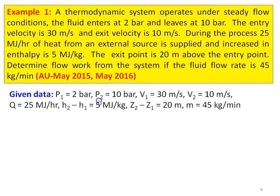Reading the problem carefully and writing down the given data: P₁ = 2 bar, P₂ = 10 bar, V₁ = 30 m/s, V₂ = 10 m/s. Heat transfer Q = 25 MJ/hour — heat is supplied to the system, so it is positive. Enthalpy increase H₂ − H₁ = 5 MJ/kg. Exit point is 20 m above entry point, so Z₂ − Z₁ = 20 m. Mass flow rate is 45 kg/min.